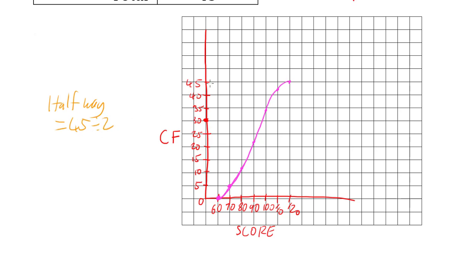So halfway would be 45 divided by 2. Because if we think about this as a percentage, that's 100%, that's all of my data. So half of my data would be halfway there. So 45 divided by 2, which means we want to find 22.5.